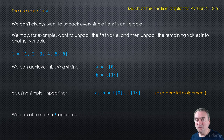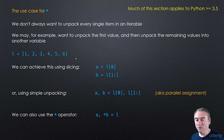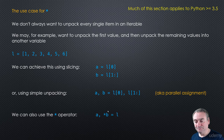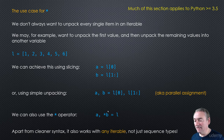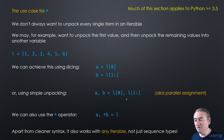We can also use the star operator like this: A, *B = L. It does exactly the same thing — it takes the first element of the iterable and puts it into A, then makes everything else into a list and puts it into B. It's cleaner syntax, and the main difference is that it applies to any iterable, not just sequence types.